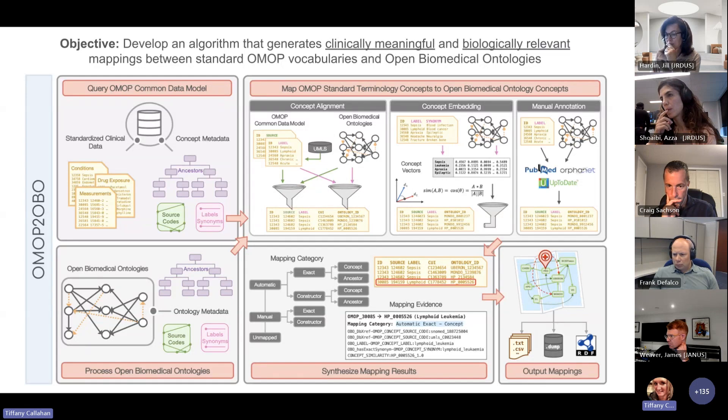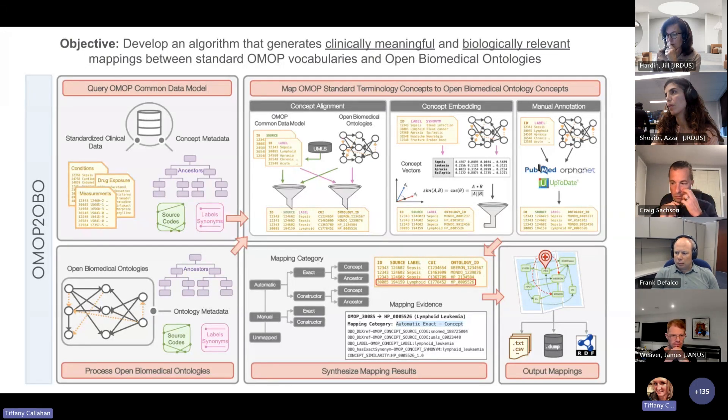And throughout the mapping process, the system tracks important metadata and collects evidence that it uses to categorize and output with the mappings. And the paper focused on leveraging this system to map a large subset of condition occurrence, drug exposure ingredient, and measurement results.